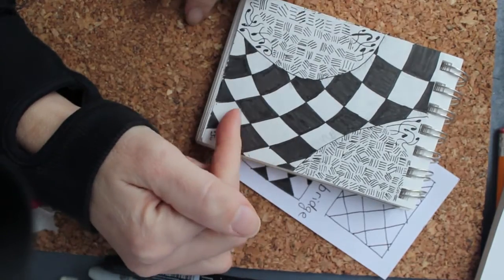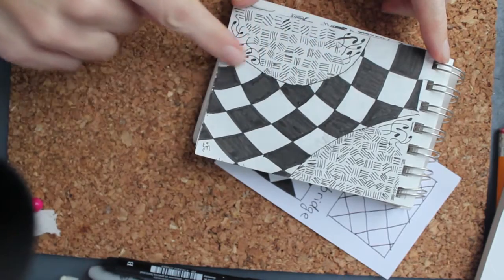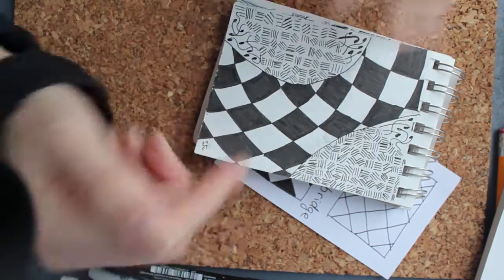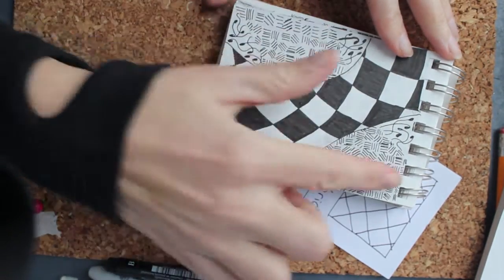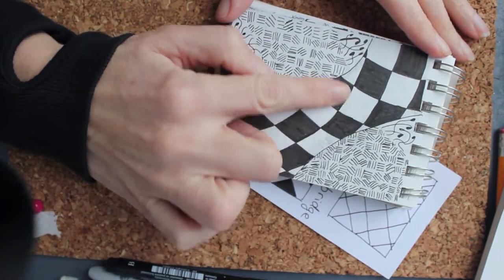So as you can see here, I used Knight's Bridge. I took it literally and made it into kind of a bridge over some water, and these are the plants on the side. That was my thinking when I made it.